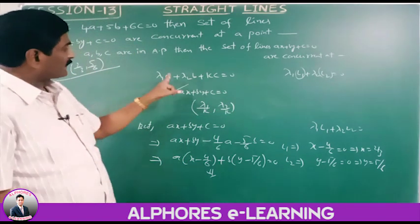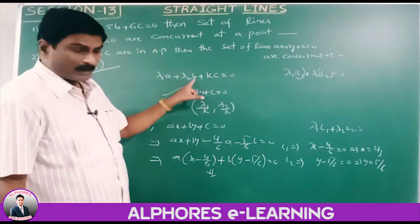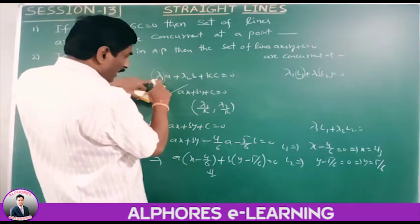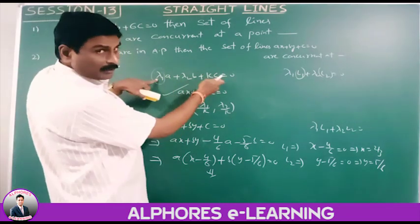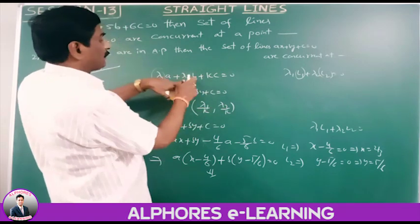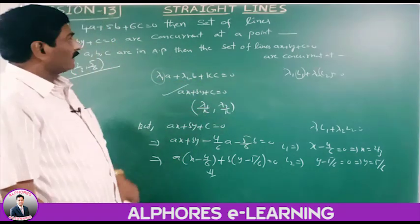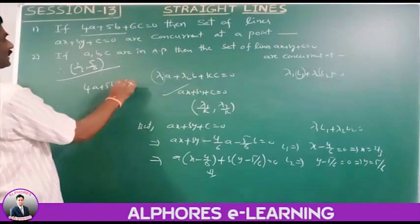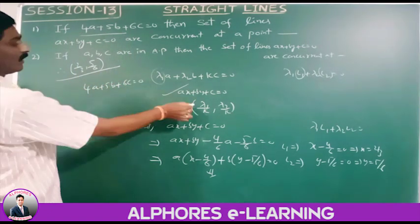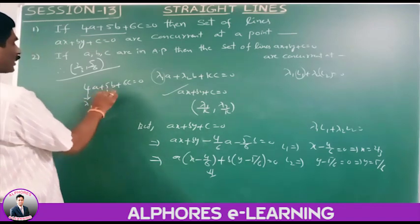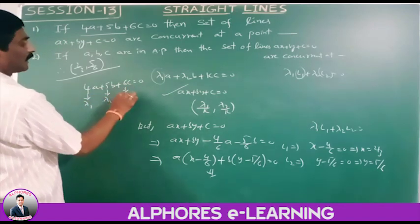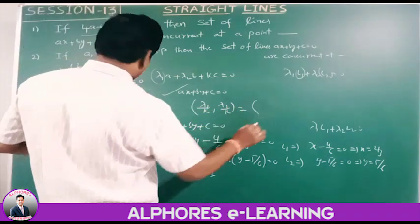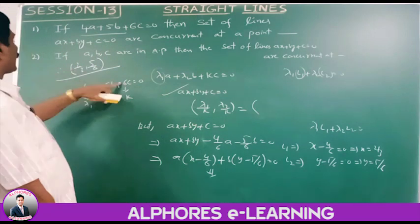From the given condition 4a plus 5b plus 6c equals 0: lambda-1 is 4, lambda-2 is 5, k is 6. Applying the direct formula: lambda-1/k comma lambda-2/k gives 4/6 comma 5/6, which simplifies to 2/3 comma 5/6. This is the direct formula — please note it.